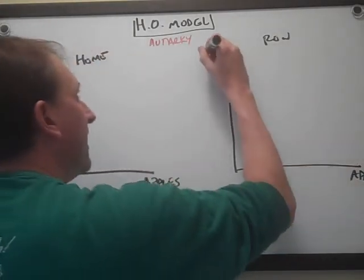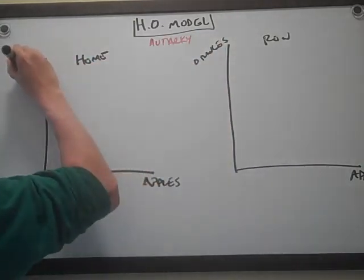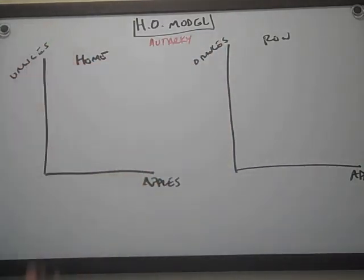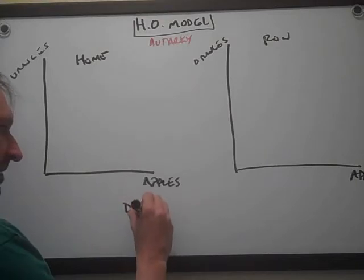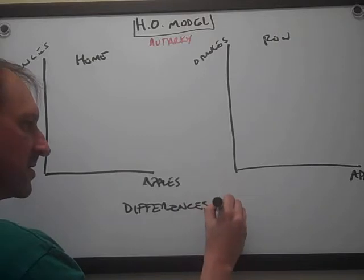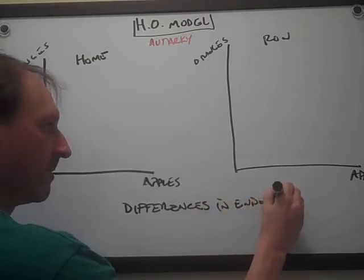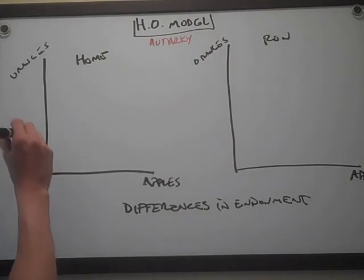Let's start out by looking at home. We know countries are endowed differently. That's one of the ingredients for trade - we have to have differences in endowment. Let's assume that home is really good at making oranges. Maybe home is on the equator and row is up north somewhere, and they're really good at making apples. Warm weather is good for oranges, cold weather is good for apples.